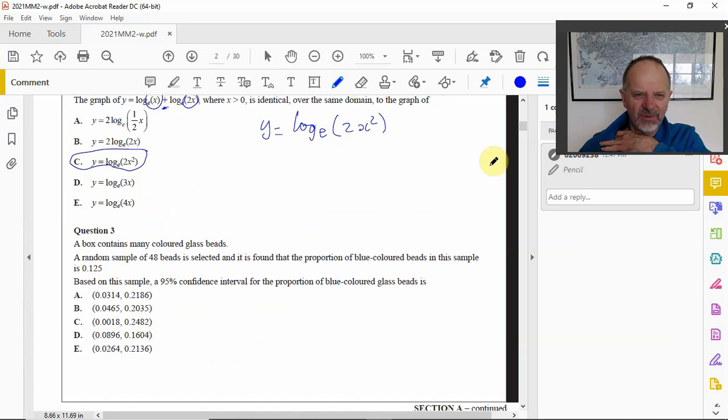The next one is a statistic sampling. Box contains many colored beads, random sample. So I'm sampling here, sample 48, so n is 48. Found the proportion of blue.